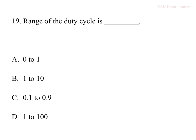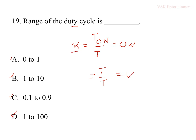The nineteenth question: the range of duty cycle is — options are 0 to 1, 1 to 10, 0.1 to 0.9, or 1 to 100. Duty cycle α = Ton/T. If there is no on-time, α = 0; if Ton equals T (maximum), α = 1. So the range of duty cycle is 0 to 1 — option A is the right answer.